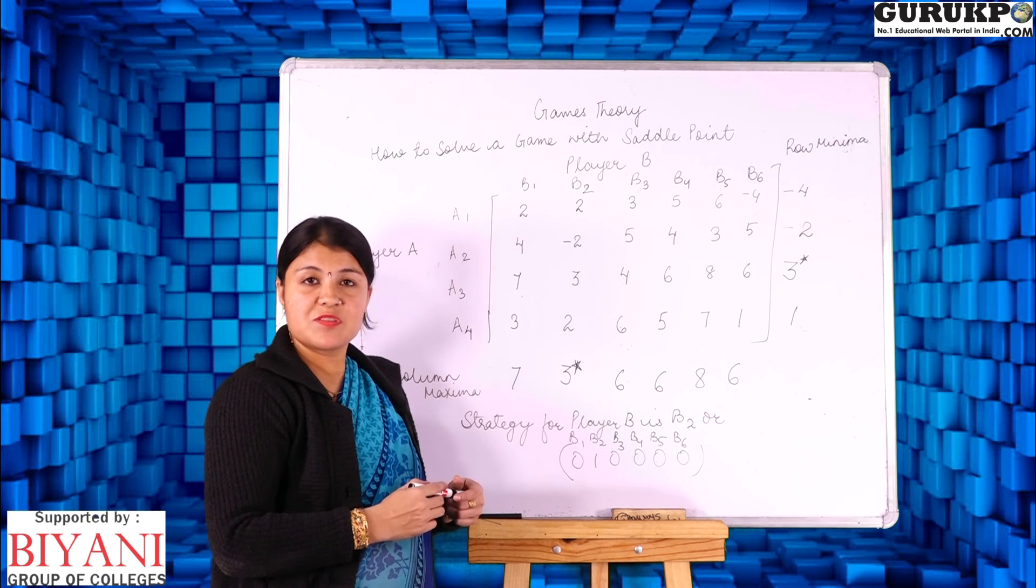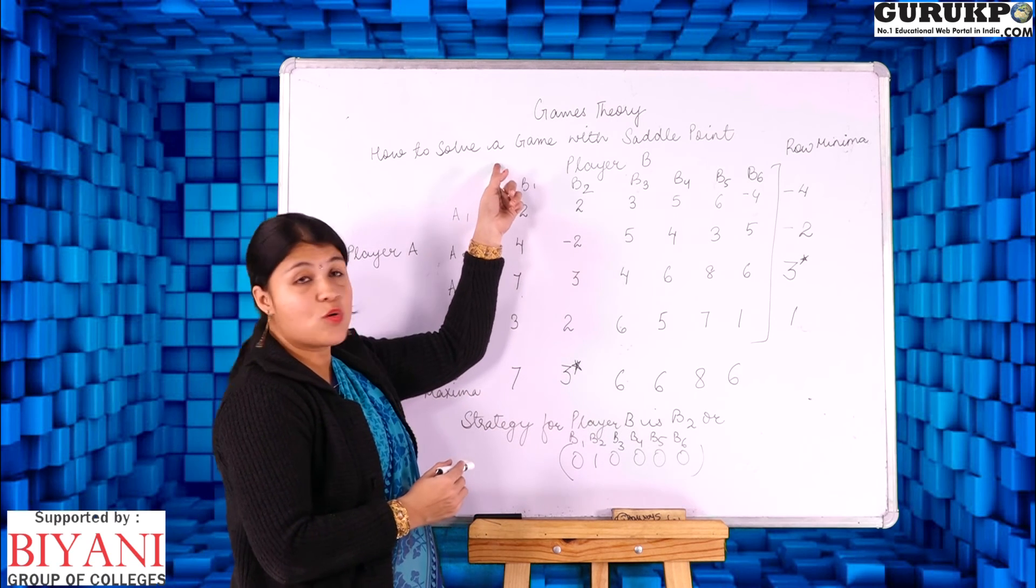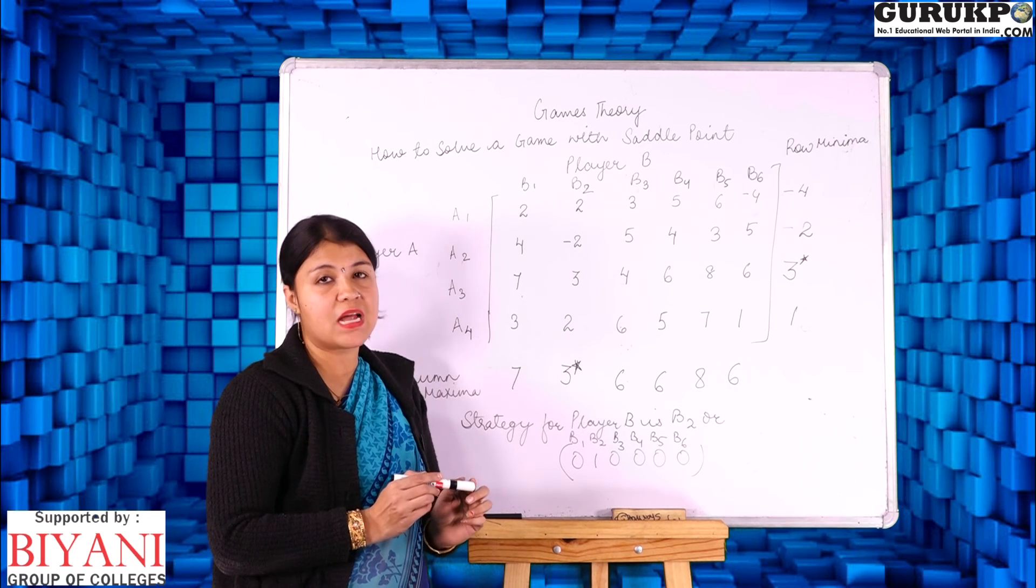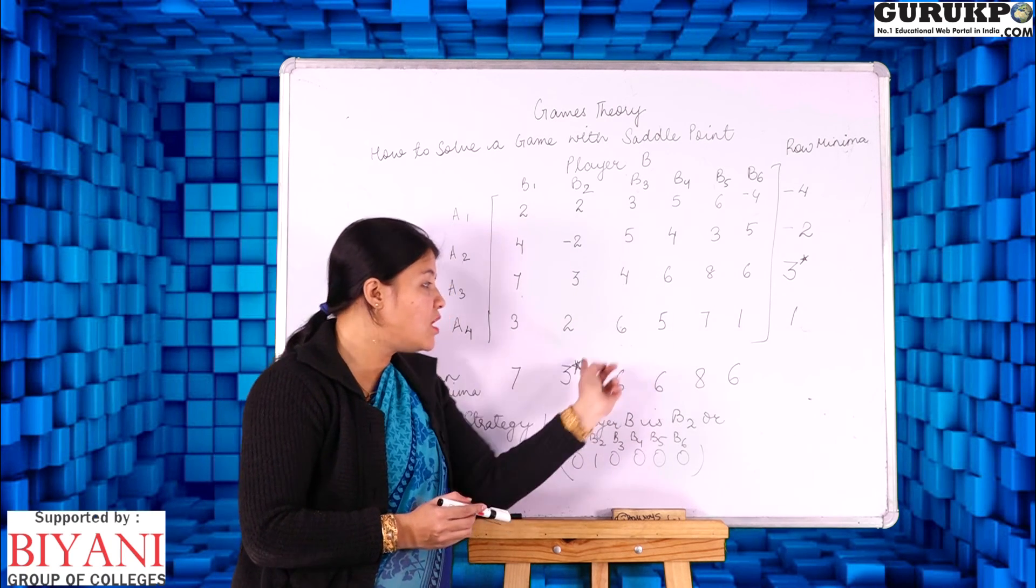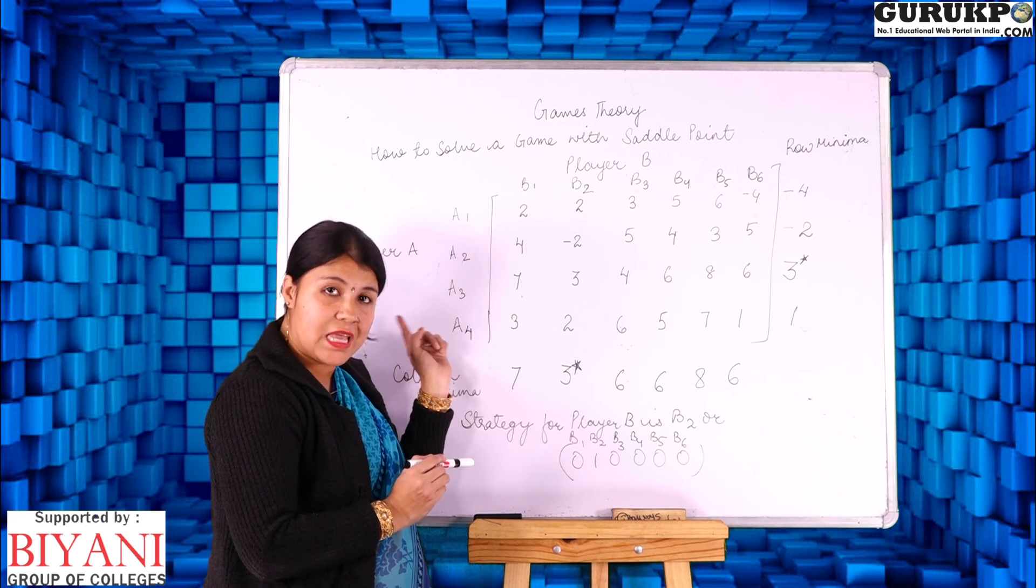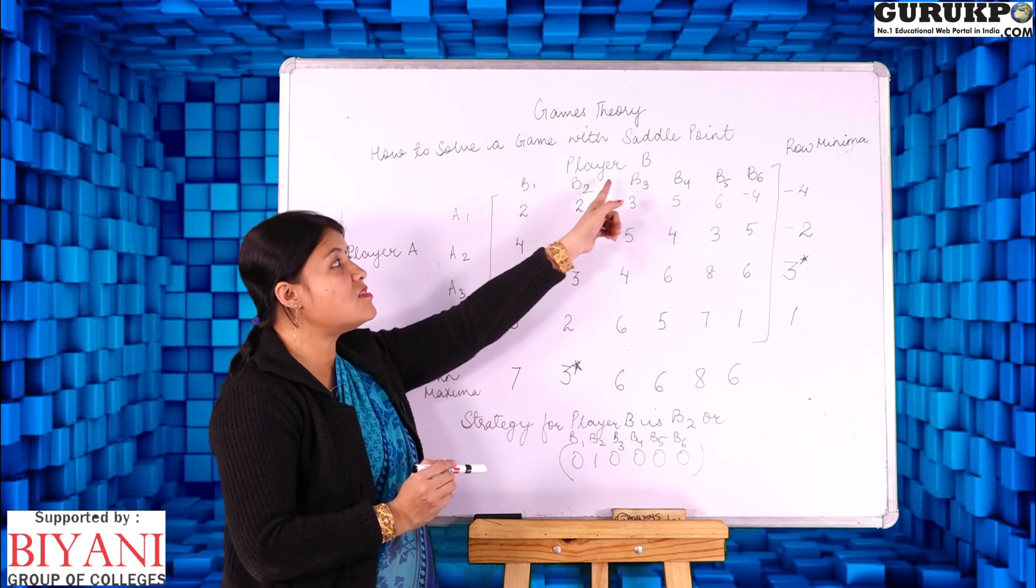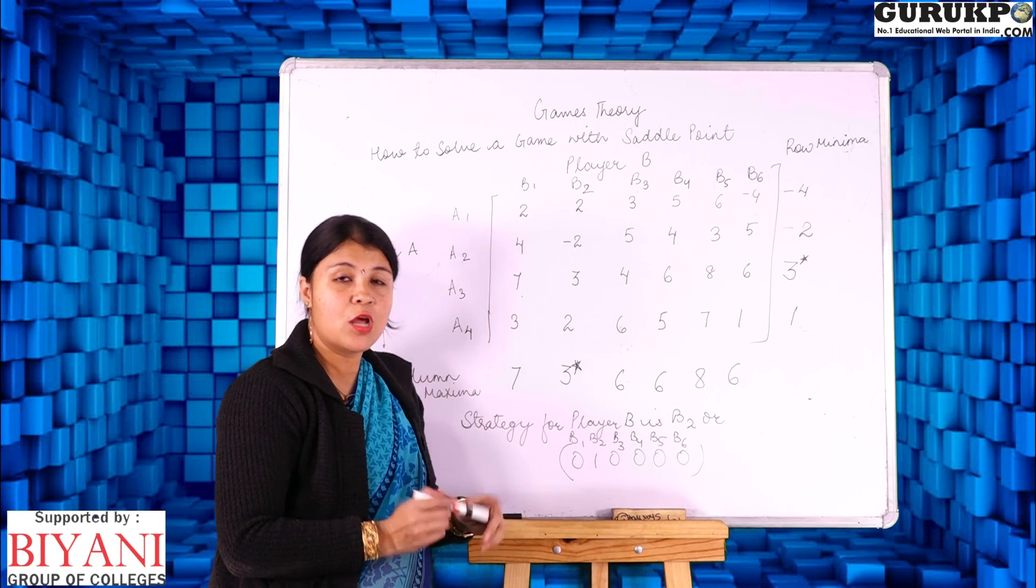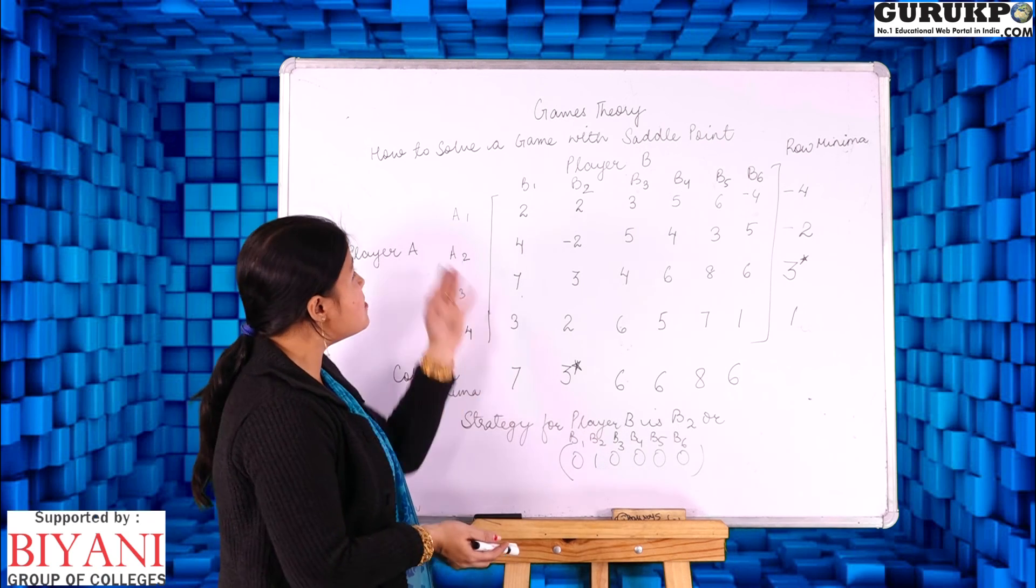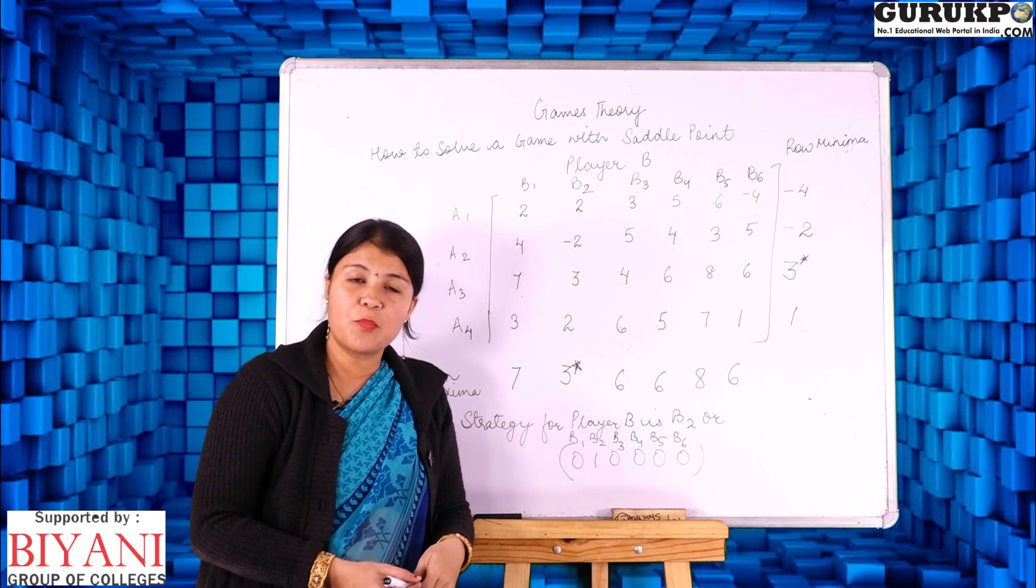So in game theory with a question with a saddle point we have to indicate three things: the value of game or saddle point which I have already explained is 3. Along with that we have to indicate the strategy for player A that is row player and strategy for player B that is column player. All these three answers give the complete solution for how to solve a game with saddle point.